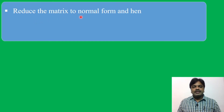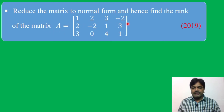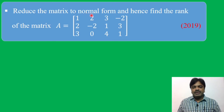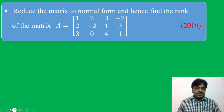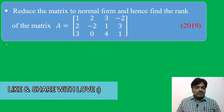Reduce the matrix to normal form and hence find the rank of the matrix. A is equal to: 1, 2, 3, minus 2; 2, minus 2, 1, 3; 3, 0, 4, 1. First we are finding the normal form and then the rank. This is the 19th question — a very, very important problem. Let us see the solution.